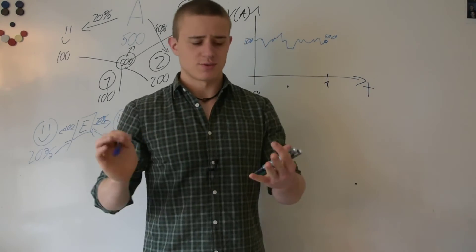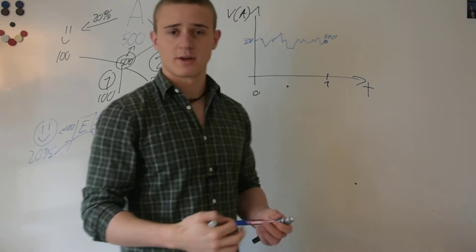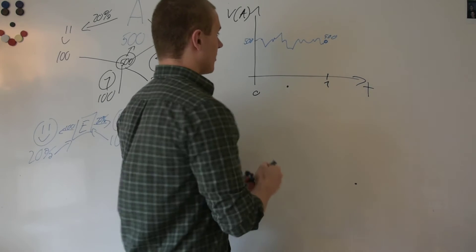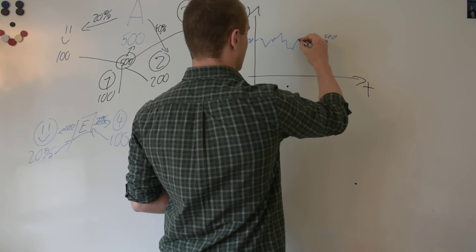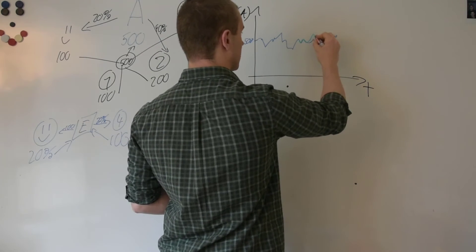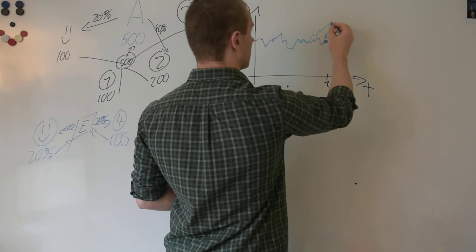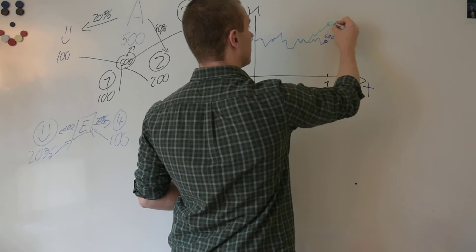But if the price rises, it's slightly more complicated or different because the price will follow the same line, let's say. At one point, it'll start breaking off and it'll rise all the way up to there, up to 600.